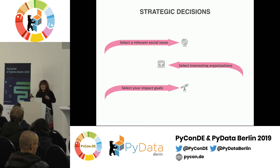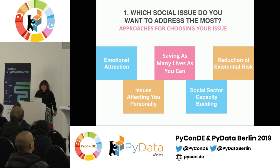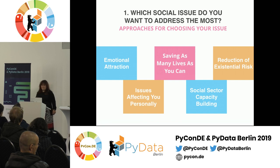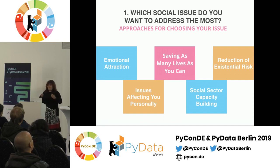Finally, clarify for yourself: when do you consider your impact to be meaningful? Do you want a really broad impact on the world? Are you happy with a very small scope? Let's dive into this. The first question again is: which social issue do you want to address the most? There are a lot of approaches for choosing your issue. The first one is a very straightforward one — emotional attraction. Sometimes you really know this issue, say global warming, the environment, feminism — something is really personally important to you, and then you just know you want to work on this.